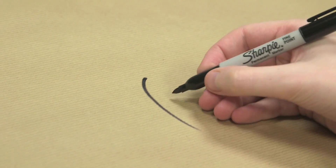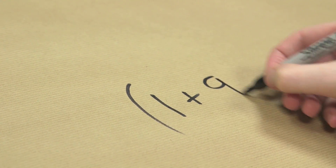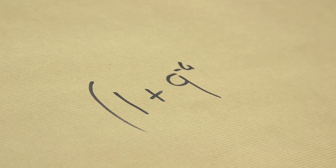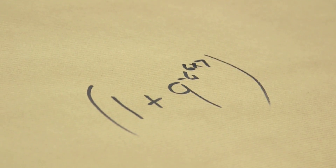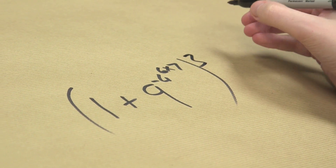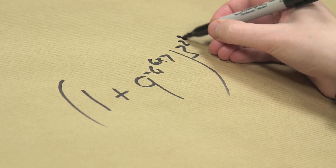Now I want to show you a pandigital formula — a formula that uses all the digits one to nine. Let me write it down. It's one plus nine to the power of minus four to the power of six times seven — that's all in a bracket — and then take that to a power which is three to the power of two to the power of 85.